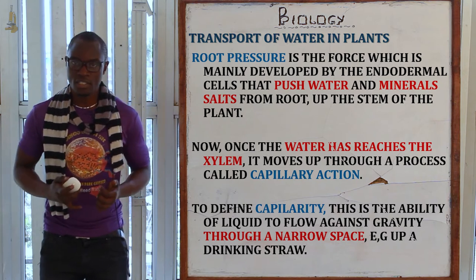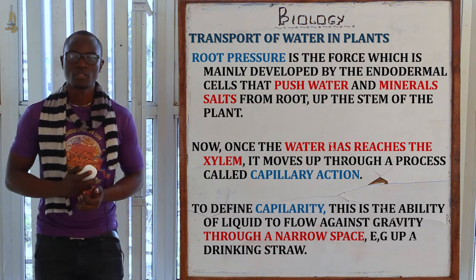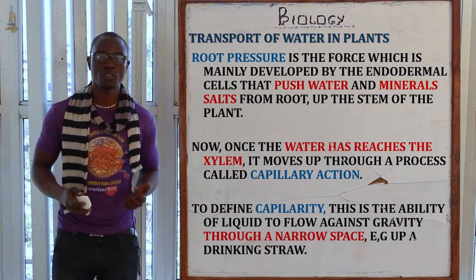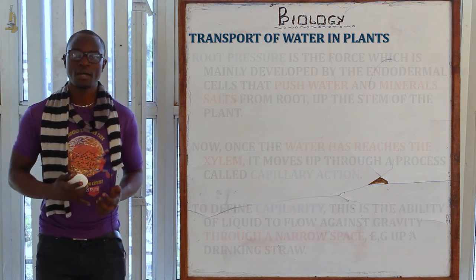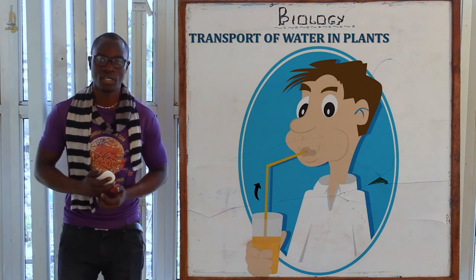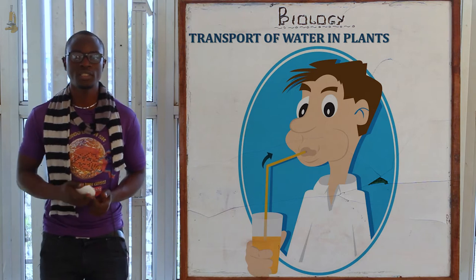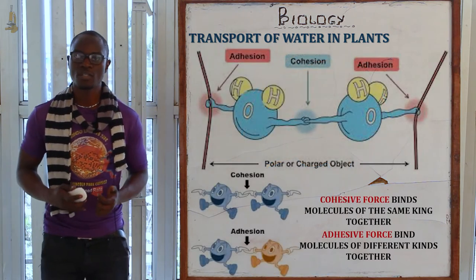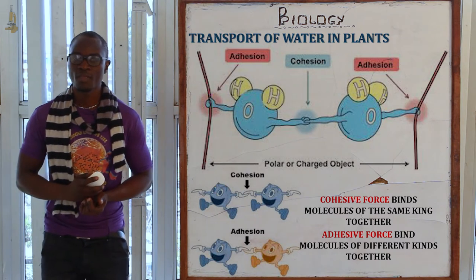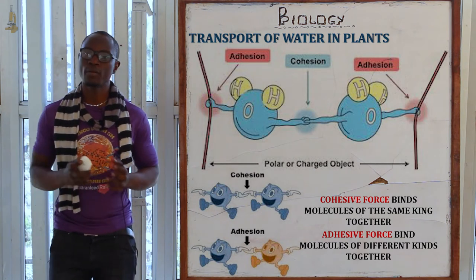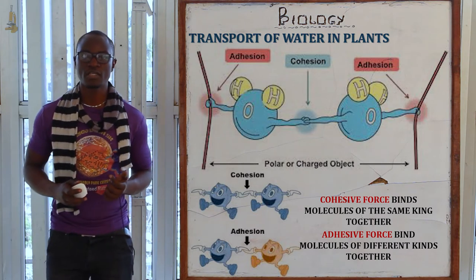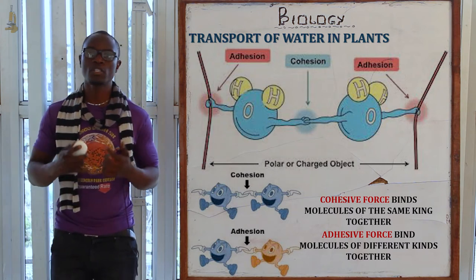Once the water has reached the xylem, it moves up through a process known as capillary action. Capillarity is the ability of a liquid to flow against gravity through a very narrow space — demonstrated by drinking liquid through a straw. Capillarity action allows water to be pulled through thin tubes due to cohesive and adhesive forces. Cohesive force binds molecules of the same kind together, while adhesive force binds molecules of different kinds, such as the water molecule and the walls of the xylem.